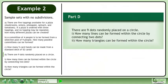In Part D, there are nine dots randomly placed on a circle. In Question 1, how many lines can be formed within the circle by connecting two dots? In Question 2, how many triangles can be formed within the circle?